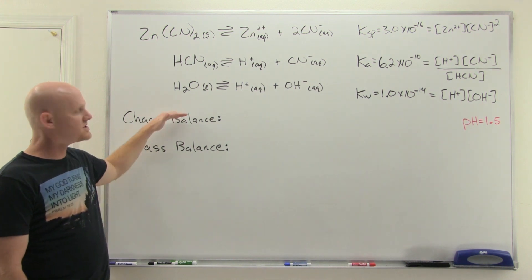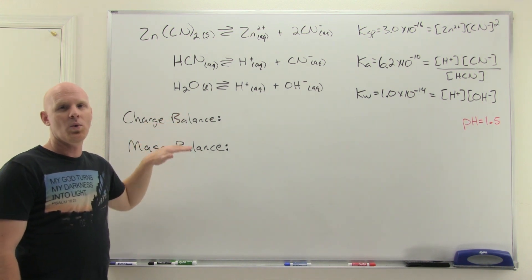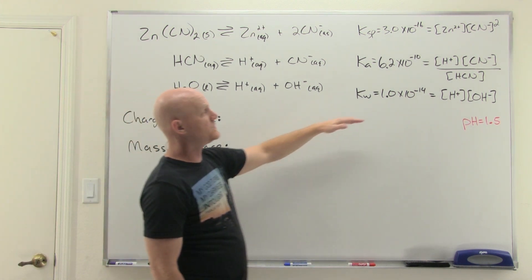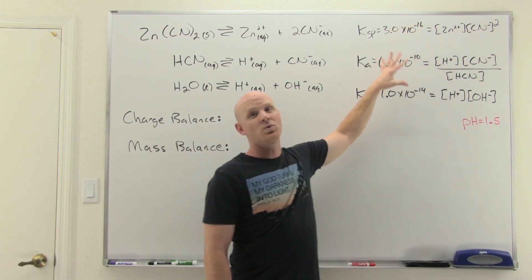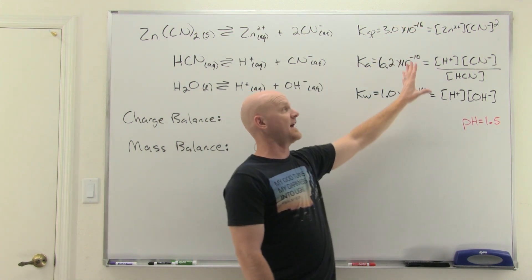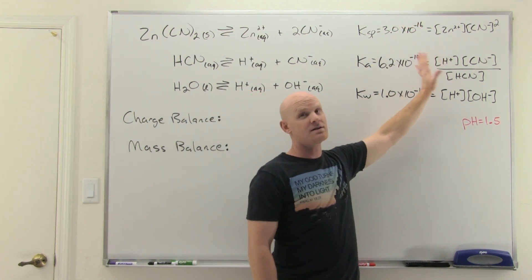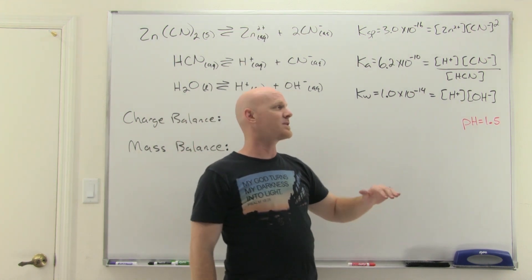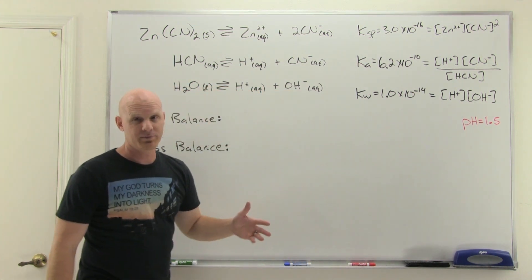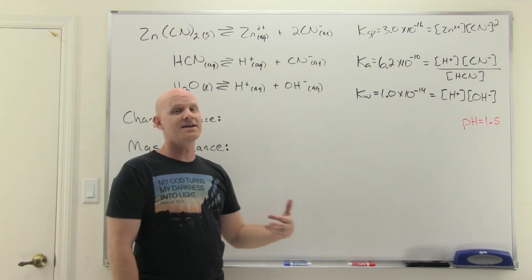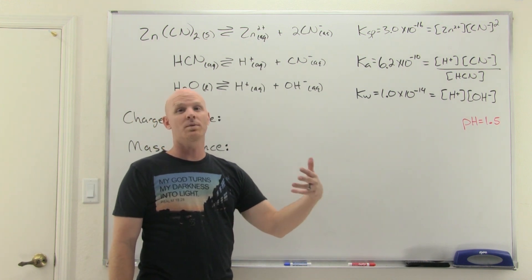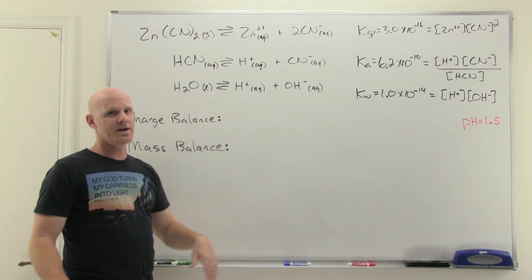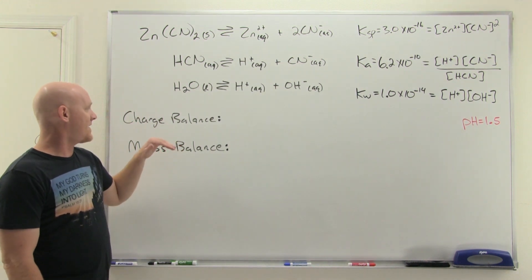You're going to have what's called the charge balance or the mass balance. One thing to note with your equilibrium constant expressions: if you want to account for non-ideality and start using activities, that's on you — I'm not going to do that in this lesson, so we're going to leave this simplistic. That is a possibility if you're getting non-ideality and trying to get a more precise answer, but here I'm going to totally ignore any kind of non-ideality.